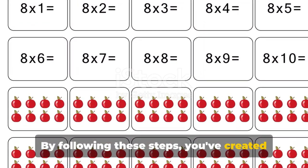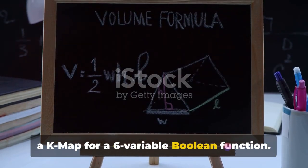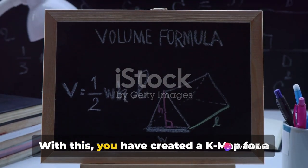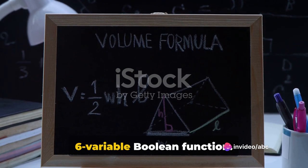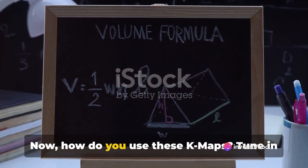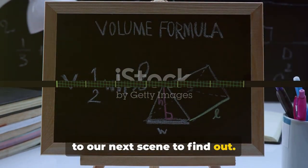They can be included in any group to help simplify the function. By following these steps, you've created a K-Map for a 6-variable Boolean function. With this, you have created a K-Map for a 6-variable Boolean function. Now how do you use these K-Maps? Tune into our next scene to find out.